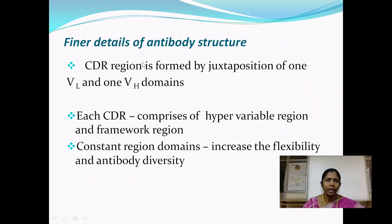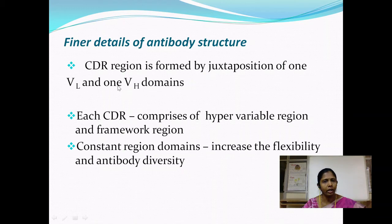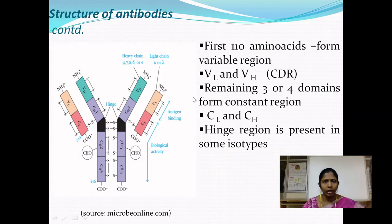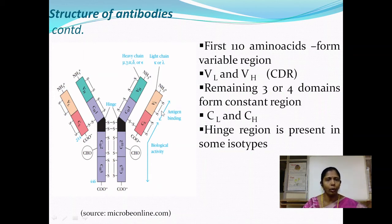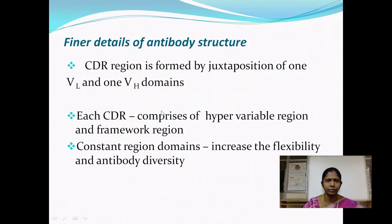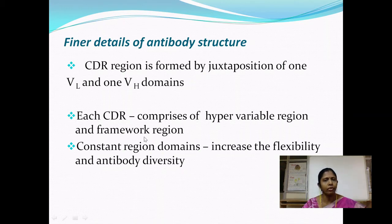Looking at the final details of antibody structure: the Complementarity Determining Region (CDR) is formed by the juxtaposition — the spatial arrangement — of one variable light chain domain (VL) and one variable heavy chain domain (VH). These are spatially juxtaposed to give rise to the CDR or the variable region.